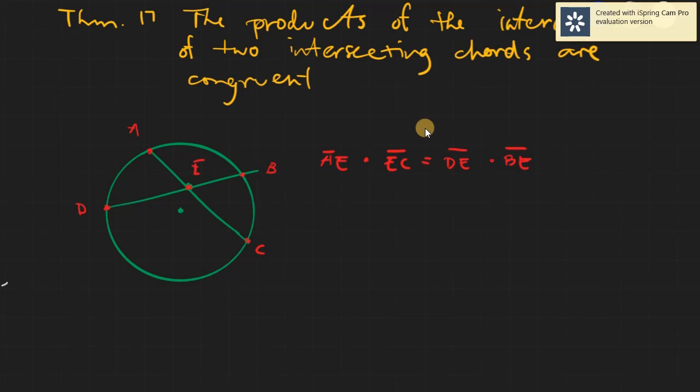Theorem 17 on circles states that the products of the intercepts of two intersecting chords are congruent. To be more specific, if you have two chords in your given figure and they are intersecting, it means that the chord will be divided into two parts, not necessarily equal parts, but just simply two parts.